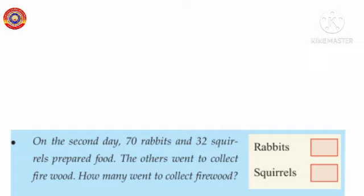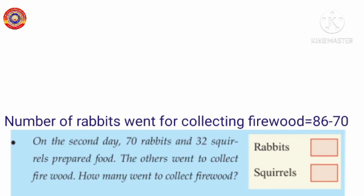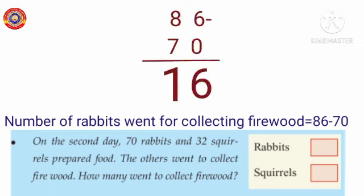Here, total number of rabbits equals 86. Number of rabbits cooking equals 70. Number of rabbits went for collecting firewood equals 86 minus 70. Here, 6 minus 0 is 6. 8 minus 7 is 1. 86 minus 70 equals 16.